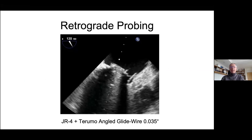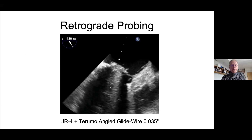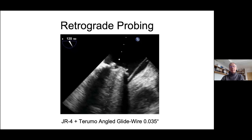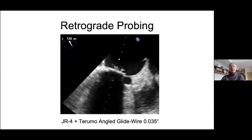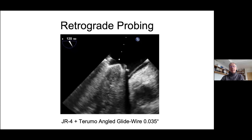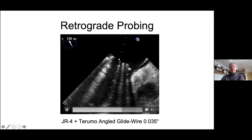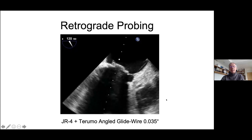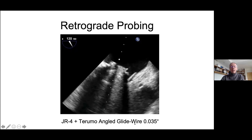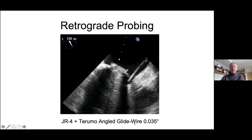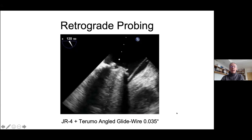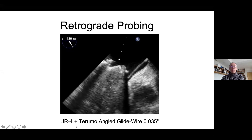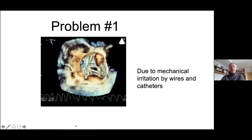With this technique, I do not really need transeptal punctures. You can see this is the valve, you see the left atrium, and the wire is across the leak. This was a Terumo angled wire, 0.035, and I used a JL4 to cross that leak.